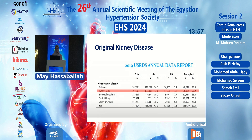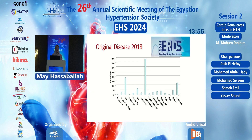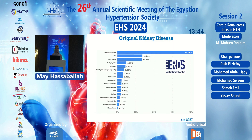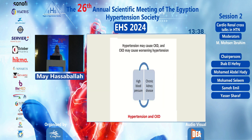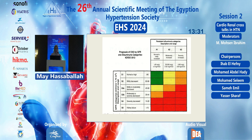According to the US RDSS, hypertension is the second cause of end-stage renal disease. However, in Egypt, according to the Egyptian Renal Data System, hypertension is the first cause of end-stage renal disease — a finding confirmed in both 2018 and 2020. There is a very strong bidirectional relationship between hypertension and CKD.